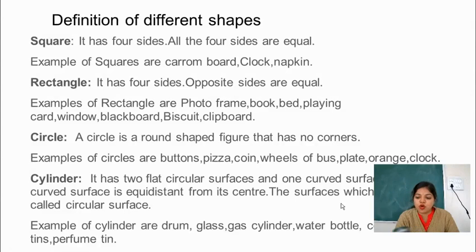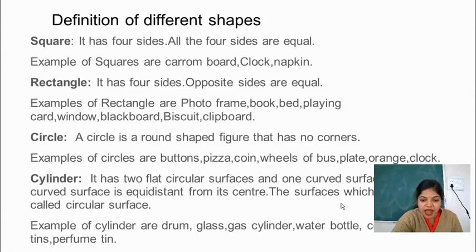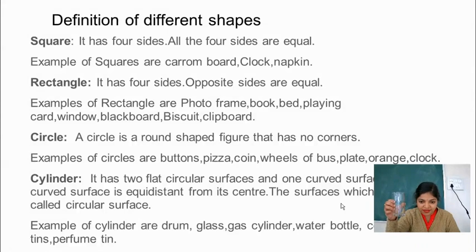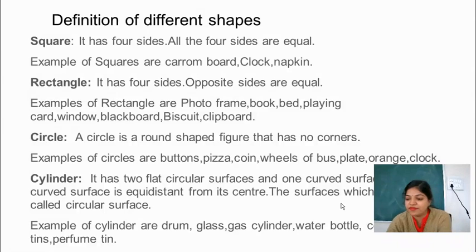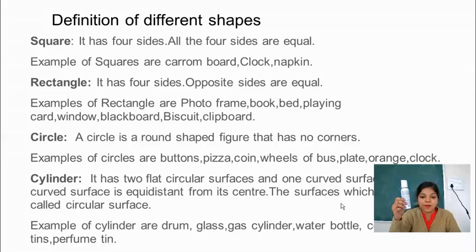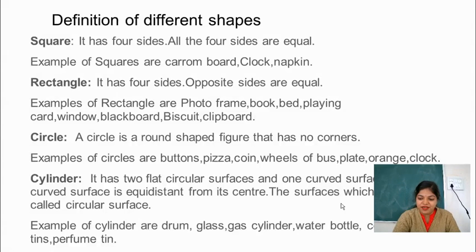There are so many examples of cylindrical objects. This is a glass — this is an example of a cylindrical object. And one more example: this is a perfume tin, which is also an example of a cylindrical object.